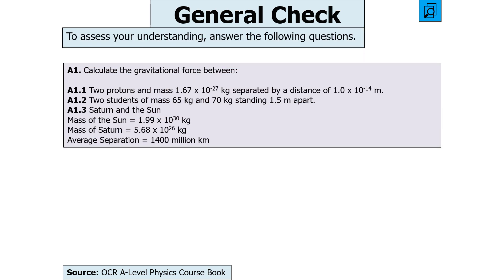The next question says: calculate the gravitational force between two protons of mass 1.67 × 10⁻²⁷ kg separated by 1 × 10⁻¹⁴ m; two students of mass 65 kg and 70 kg standing 1.5 m apart; and Saturn and the Sun, where you're given their masses and average separation in kilometres. Pause the video now, then unpause when you want to go through your answer.